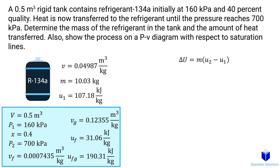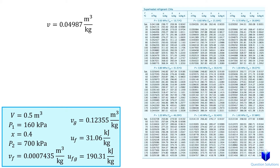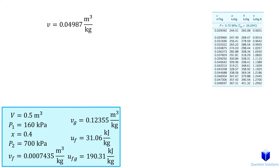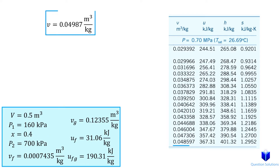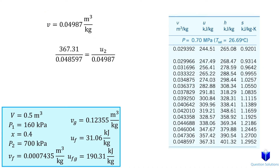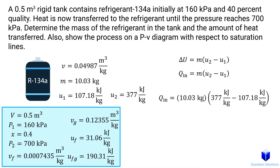So if we try to use the pressure table, we see that at a pressure of 700 kilopascals, the specific volume for the vapor is 0.029. But notice that the specific volume we found is much higher than that — that means the refrigerant is now a superheated vapor. So we need to look at the superheated vapor table. Looking at the section for 700 kilopascals, the closest value we have for the specific volume is right here. So I'm going to extrapolate using a basic ratio. We get approximately 377 kilojoules per kilogram. Now we can plug in our values and solve for the heat transfer.